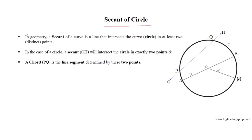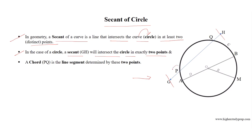Secant of a circle. In geometry, a secant of a curve is a line that intersects the curve — for example, a circle — in at least two distinct points. In the case of any circle, a secant will intersect the circle in exactly two points. For this circle, the secant GH intersects the circle at two points P and Q, where PQ is a chord determined by the two points of intersection.